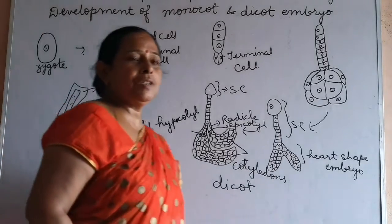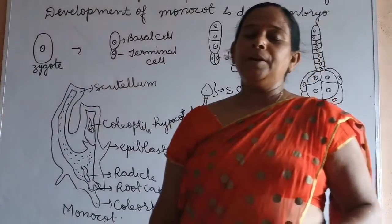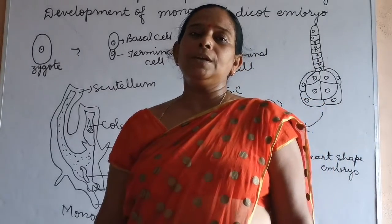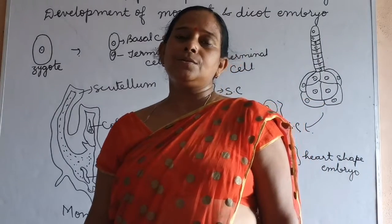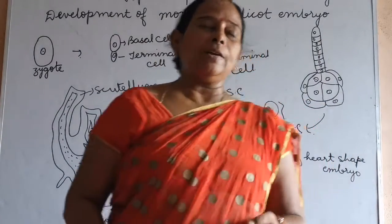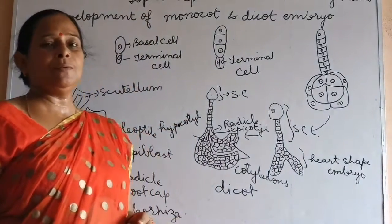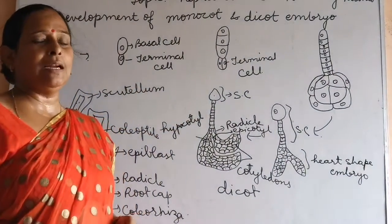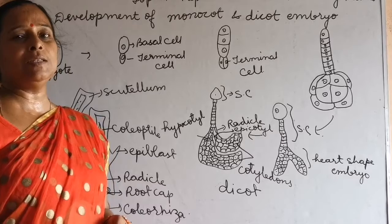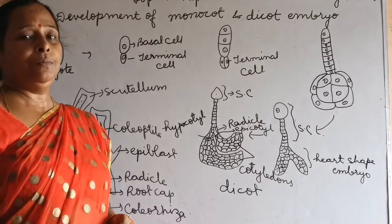We are going to discuss about the development of embryo in monocot and dicot. As the zygote formation takes place, when one of the male gamete fuses with the egg, syngamy takes place and the result is zygote formation.